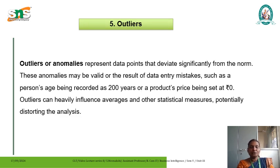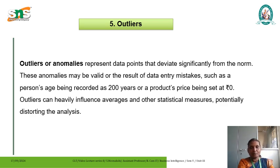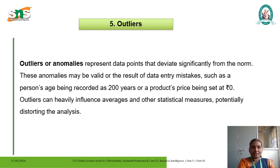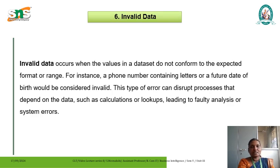The fourth type of error is called outliers, also known as anomalies. These errors represent data points that deviate significantly from the norm. These anomalies may be valid or the result of data entry mistakes, such as a person's age being recorded as 200 years or a product price being set as zero rupees. It is impossible for a person's age to be 200 years, and zero is not at all possible as a price tag. These outliers can occur due to manual carelessness and can heavily influence averages and other statistical measures, potentially distorting the analysis.